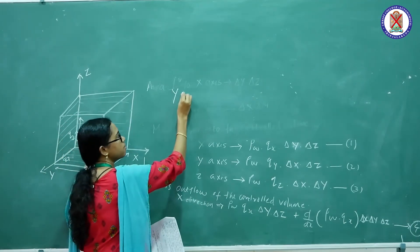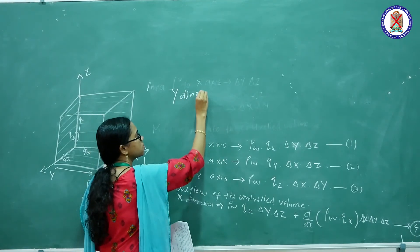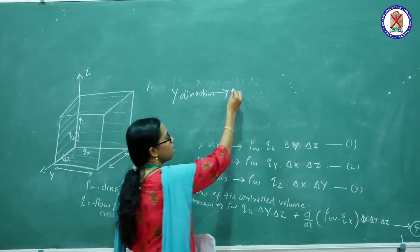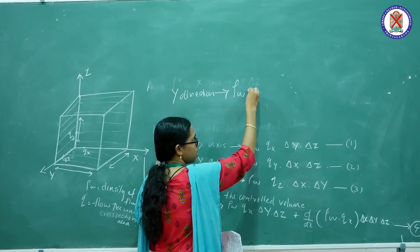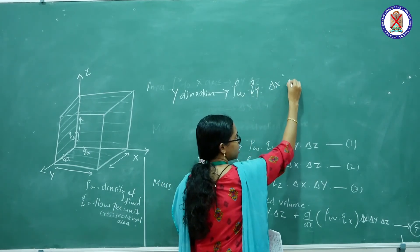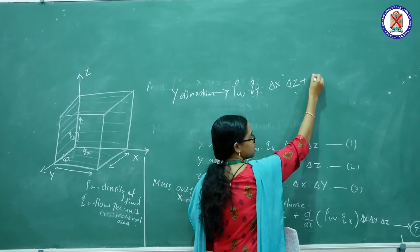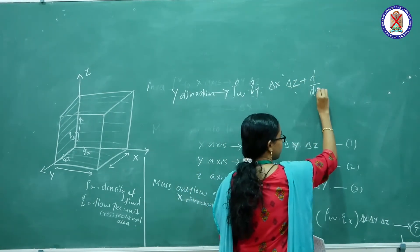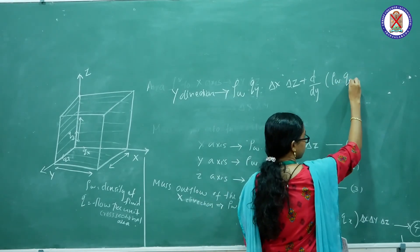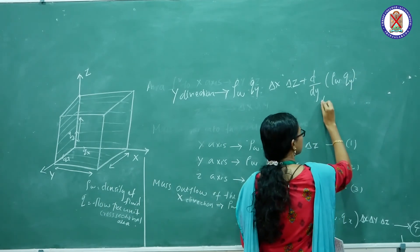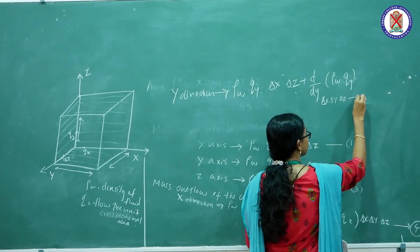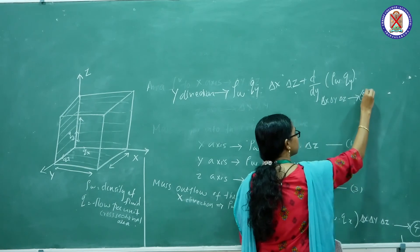Next, in the y-direction, the mass outflow can be represented by the equation: rho_w into qy into delta x into delta z, plus d/dy of rho_w into qy into delta x into delta y into delta z. This is Equation 5.